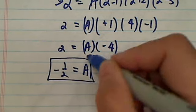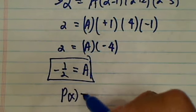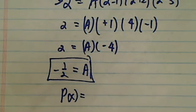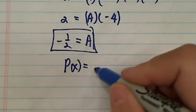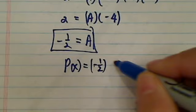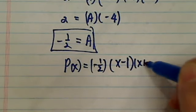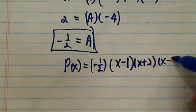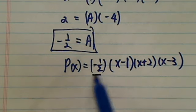Okay so if A equal to minus half, you complete the equation for your P(x) is minus half times x minus one, x plus two, x minus three. So the trick for this problem is really finding this coefficient of A here.